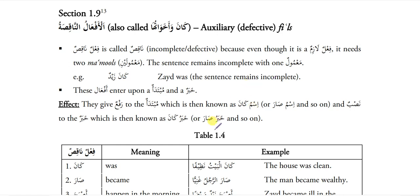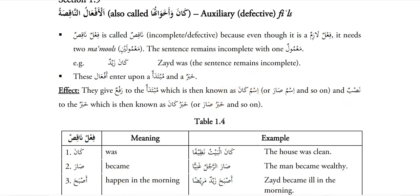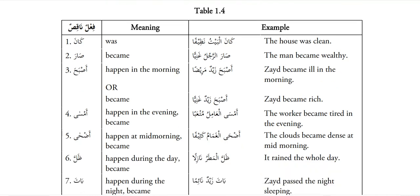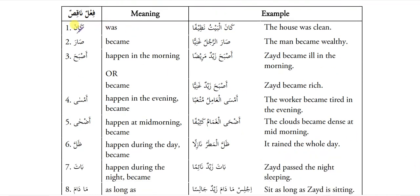There is a table with all af'al-e-nakisah and their meanings. Ka'na means 'was.' Ka'na al-baytu nazifan — the house was clean. Bayt is ka'na's ism, nazifan is ka'na's khabar. Sa'ra means 'became.' Sa'ra rajulu ghaniyan — the man became wealthy. Rajul is Sara's ism and ghaniyan is Sara's khabar.